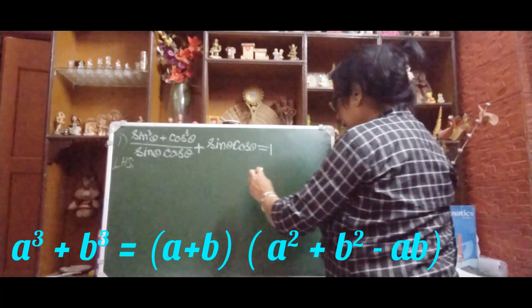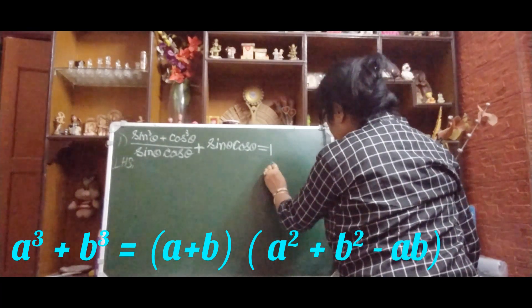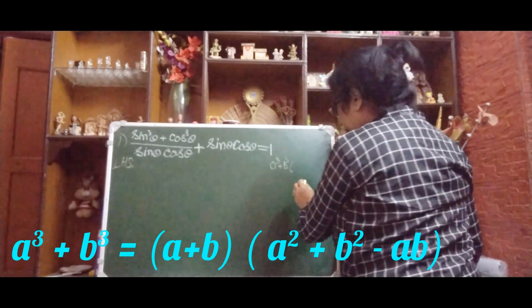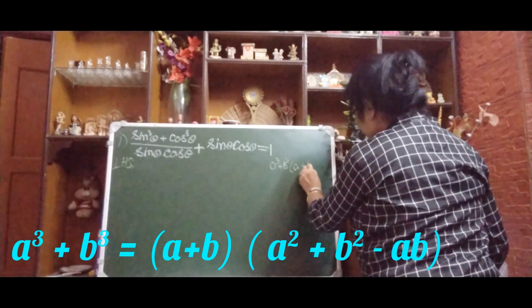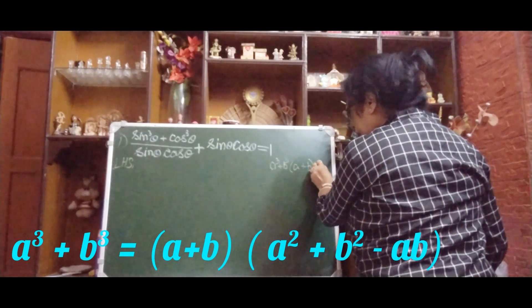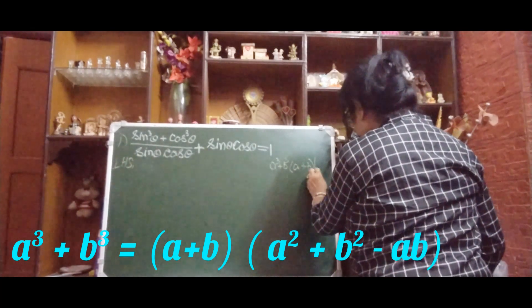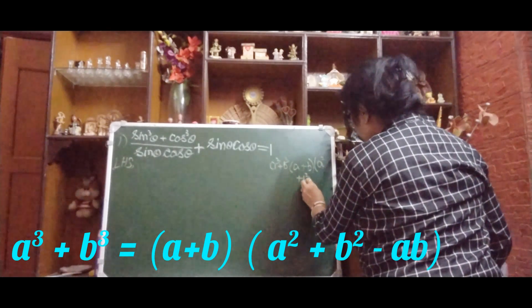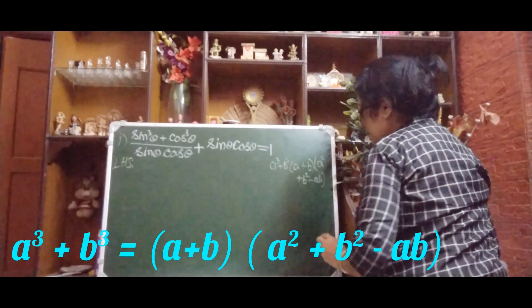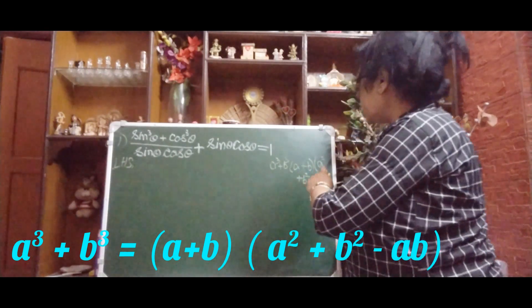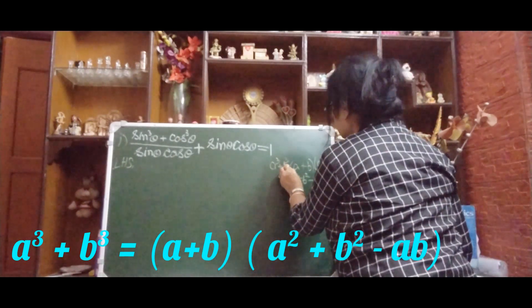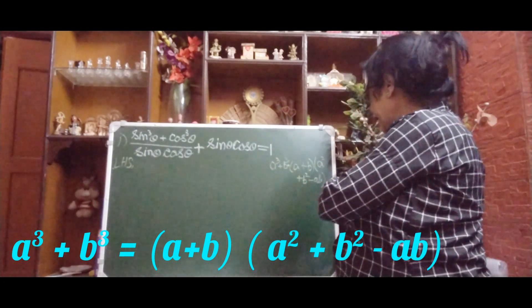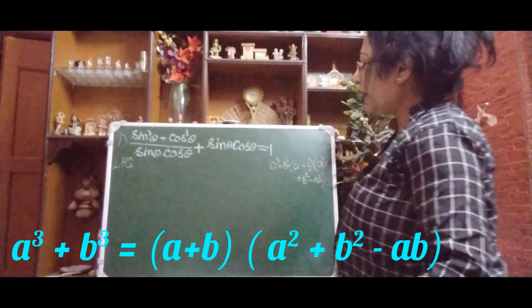If you forgot, don't worry — I am telling you. Learn it: a³ + b³ equals (a + b) into (a² + b² − ab). So a³ + b³ = (a + b)(a² + b² − ab). We will apply this formula here.